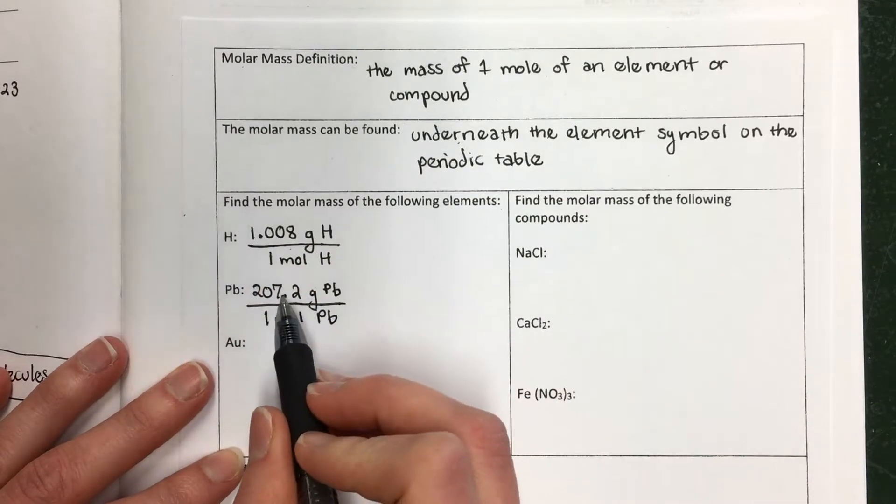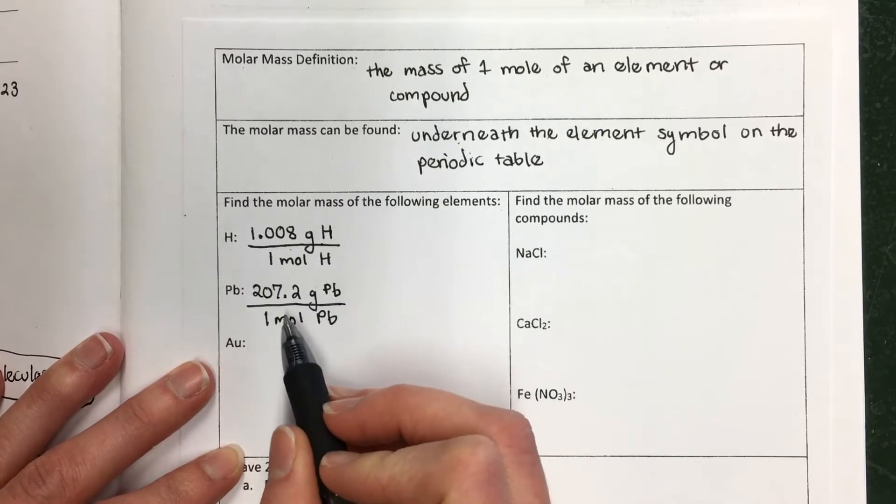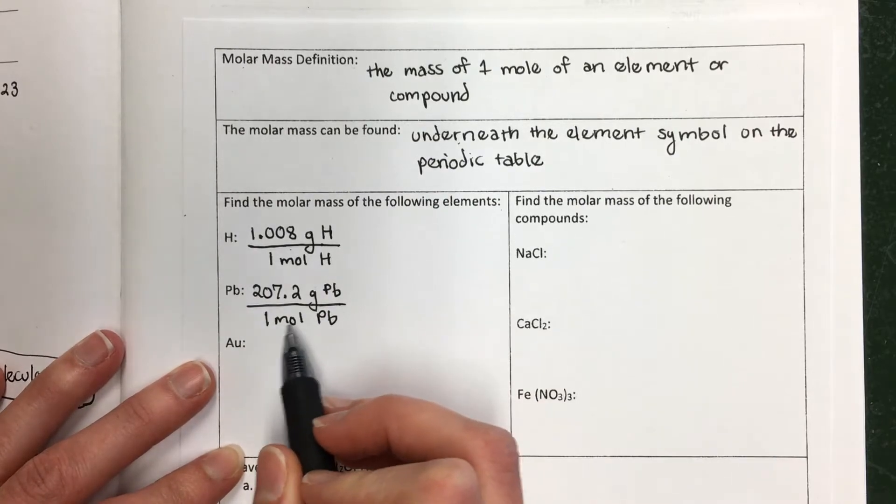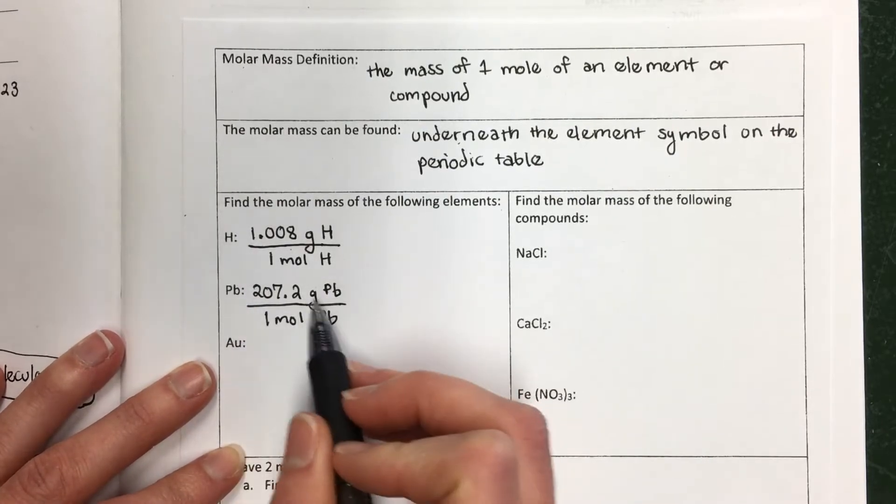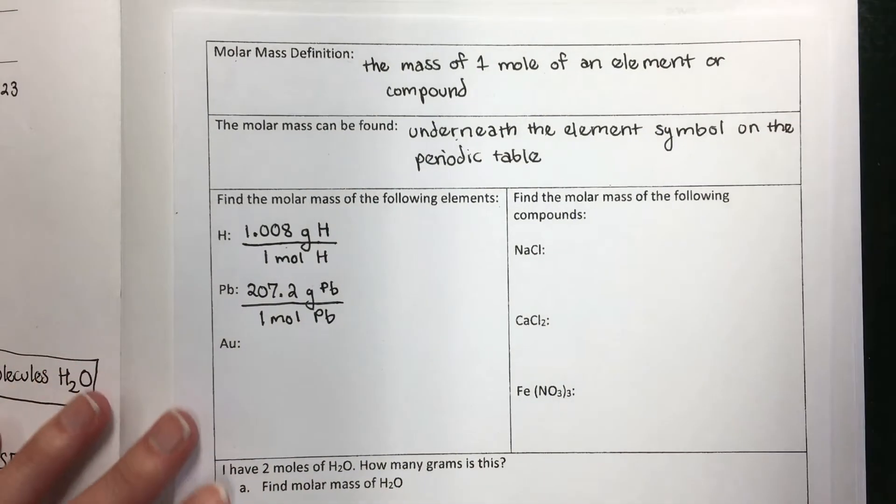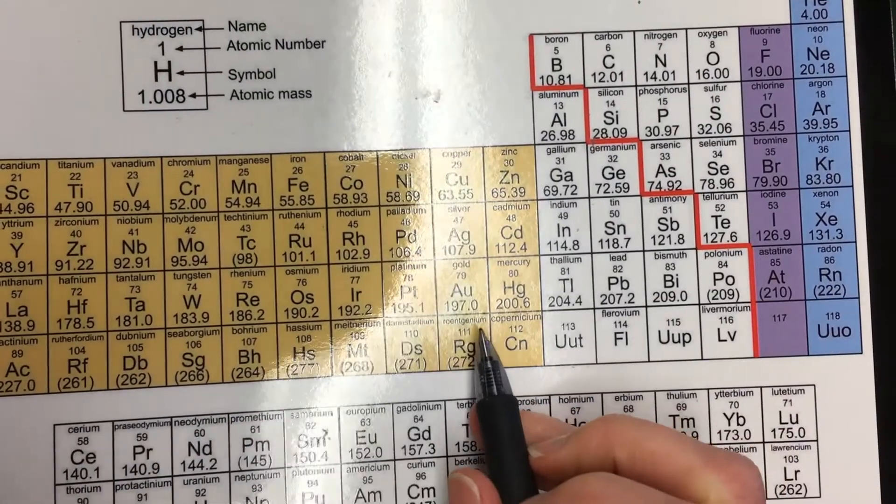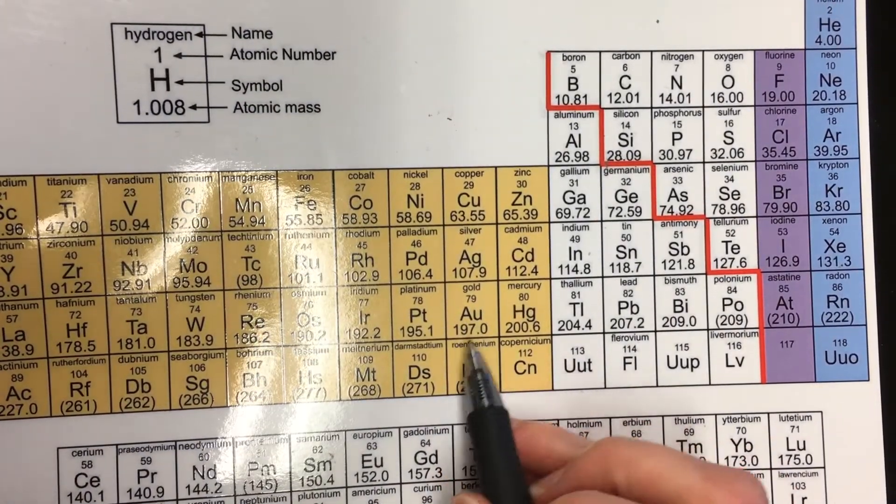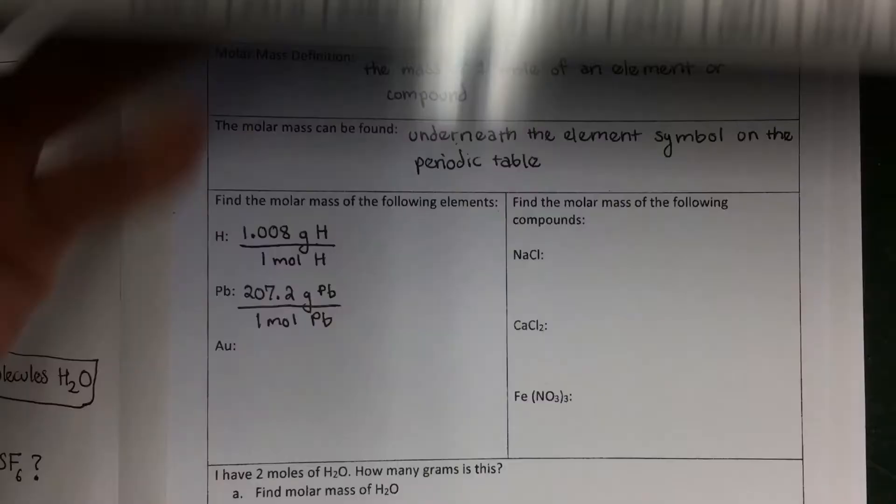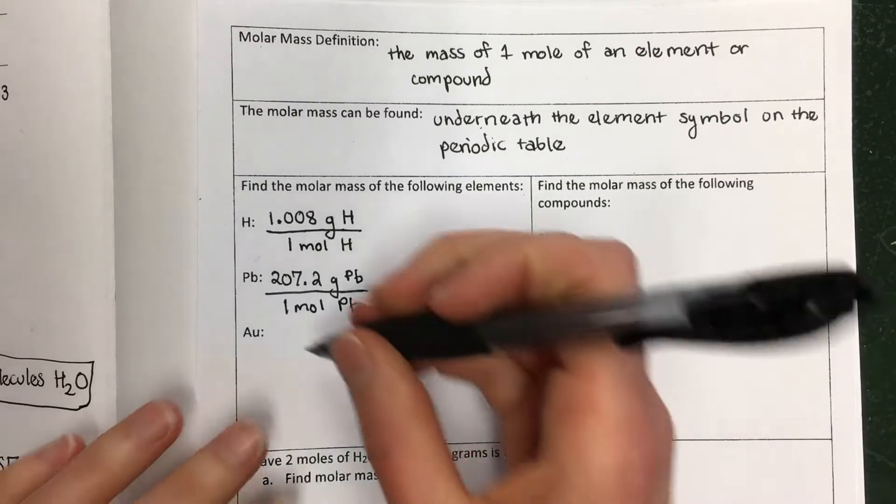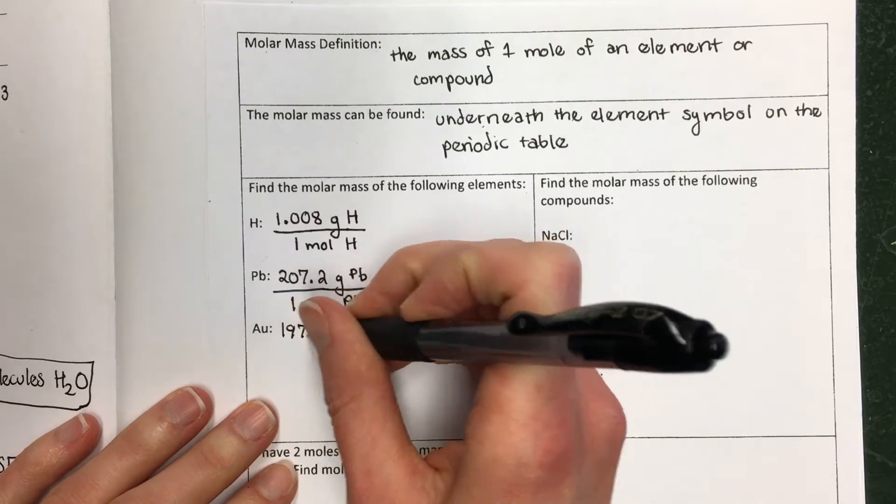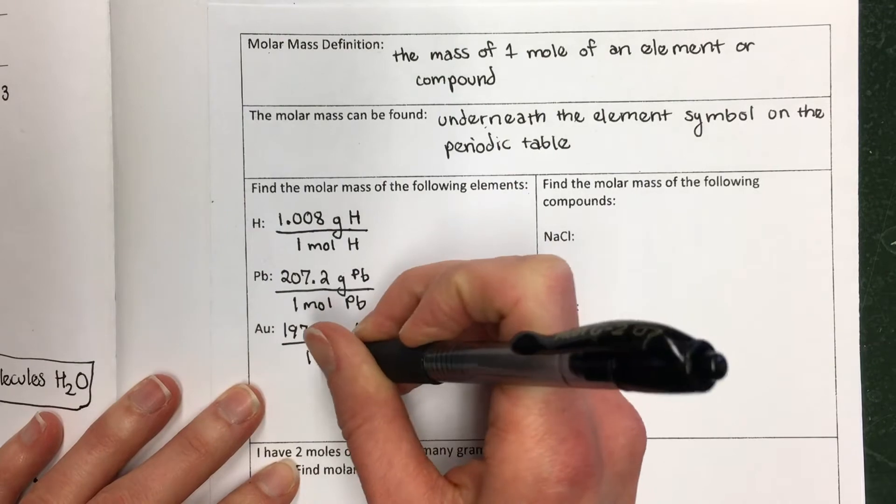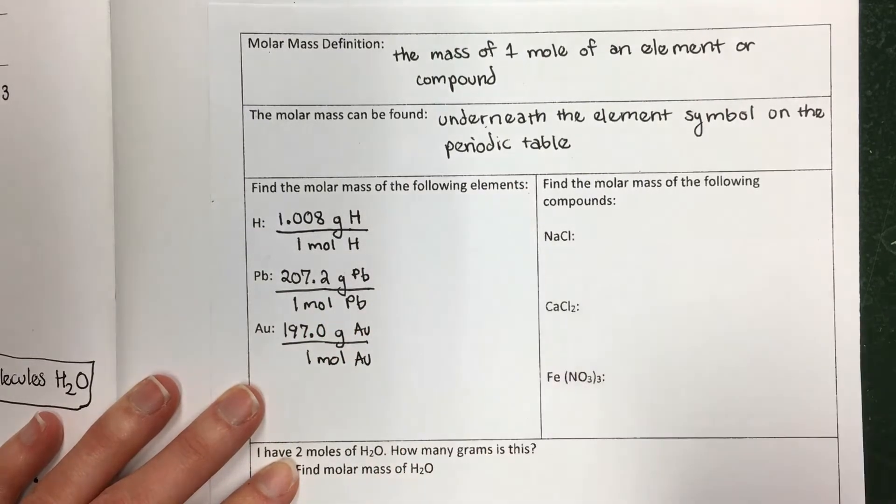Now, you want to make sure the number on the periodic table is the grams. Sometimes people get it confused and they'll write like 207.2 moles of Pb per one gram. But that wouldn't make sense, right? One mole is equal to this many grams. So it's always one mole with molar mass every single time. Let's find Au. Au is actually gold. The Latin word for gold is aurum, which starts with Au. The molar mass of Au is 197.0 grams of Au per one mole of Au.